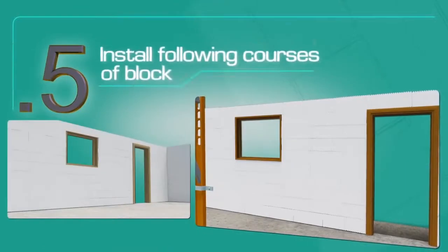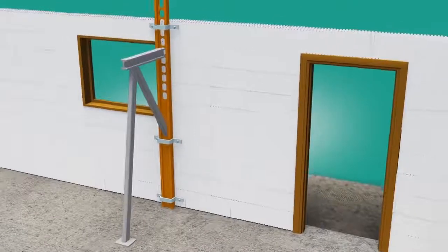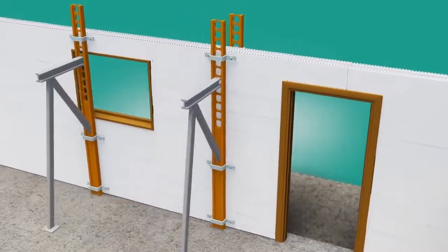Install following courses of block by continuing to overlap the courses so that all the joints are locked both above and below by overlapping blocks.